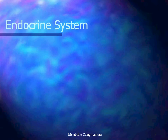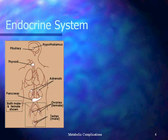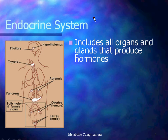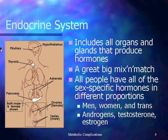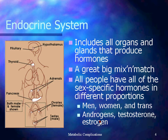All of the functionings of the metabolic system are encapsulated by the endocrine system, and you can see how many places in the body this affects. All of these organs and glands produce hormones — it's a great big mix and match. All people have all of the sex-specific hormones in different proportions. Men, women, and trans people all have androgens, testosterone, and estrogen in different proportions. The common conception is that men have testosterone and women have estrogen, but actually it's far more complicated than that, and everybody has some mixture of all of these things.